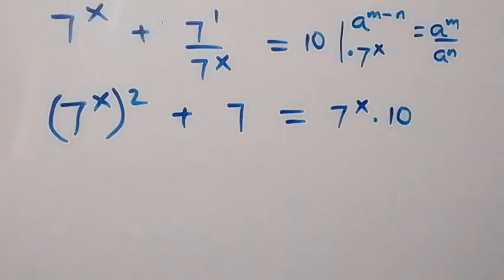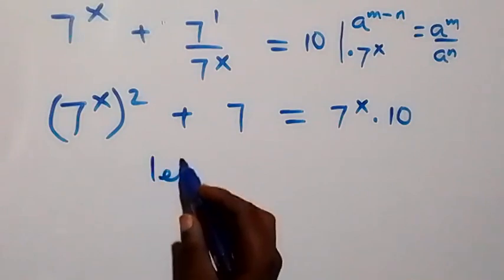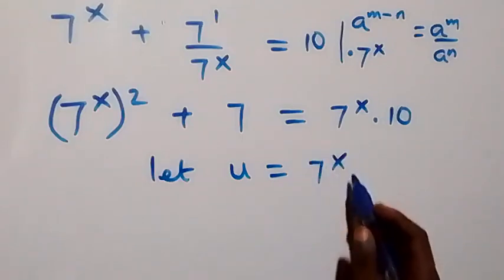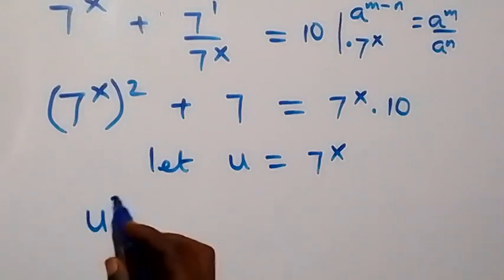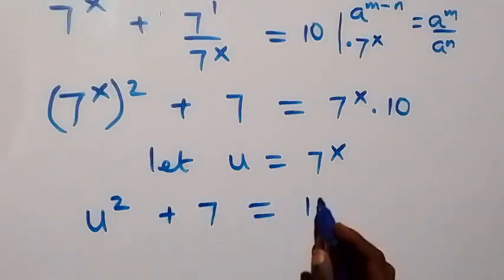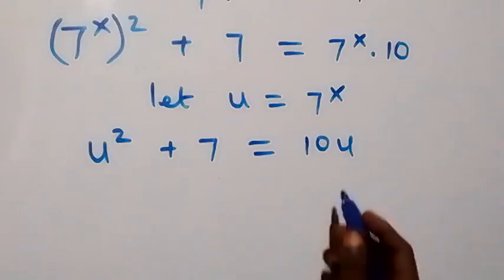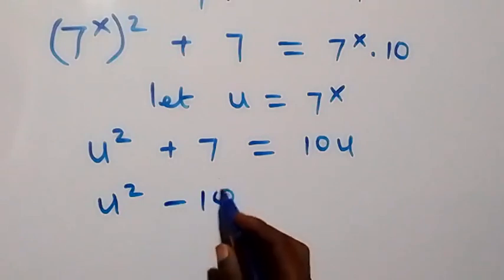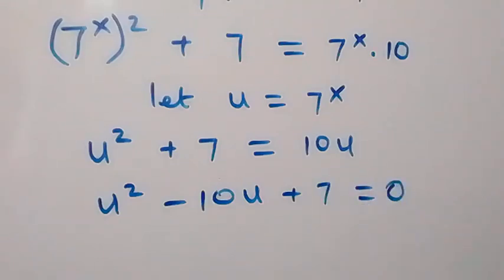We have seven raised to power x in common, so let's let u represent seven raised to power x. Then we can rewrite this equation and it becomes u squared plus seven equals to 10u. Bringing 10u to this side and rearranging, we have u squared minus 10u plus 7 equals to 0.